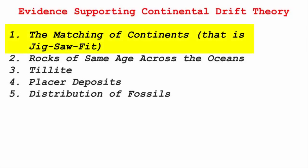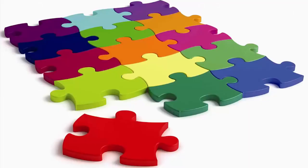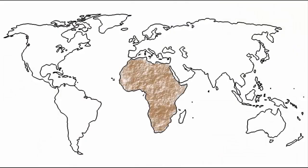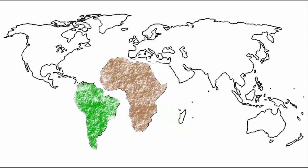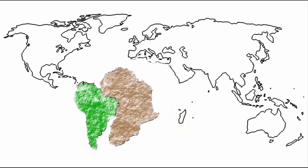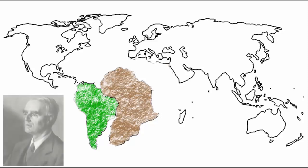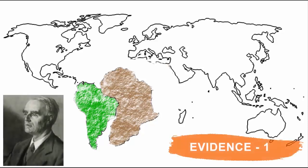The first evidence is the matching of continents — that is, the jigsaw fit. You know what a jigsaw puzzle is: a big picture is cut into various pieces of different shapes that have to be fitted together. Similarly, if you look at the shorelines of Africa and South America facing each other and bring them together, they are a good match. This fit of the Atlantic Margin was presented by Edward Bullard in 1964, forming the first evidence in support of the Continental Drift Theory.